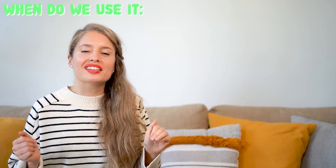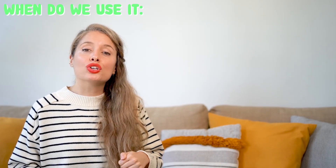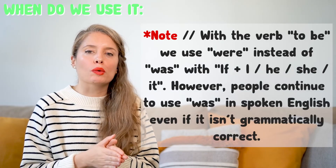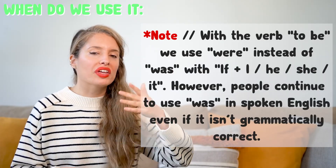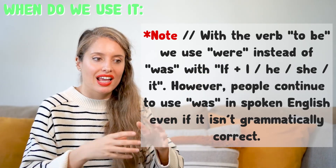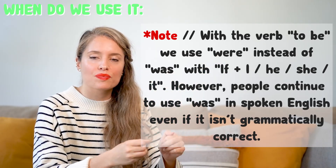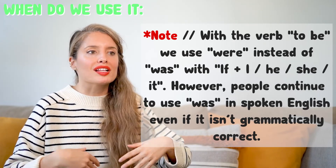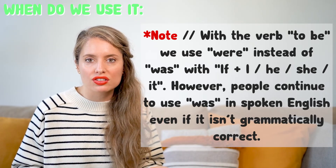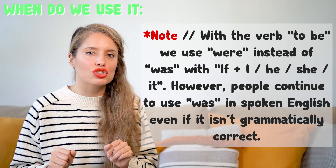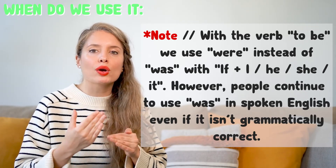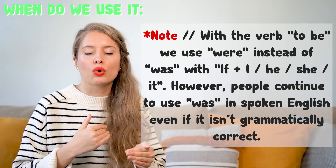You may also have noticed I used 'were' instead of 'was' in that last example. Always with the verb 'to be,' use 'were' instead of 'was' with 'if I,' 'if he,' 'if she,' or 'if it' in the IF clause. Although some people do use 'was,' this would be grammatically incorrect. So in the second conditional: I were, he were, she were, it were.